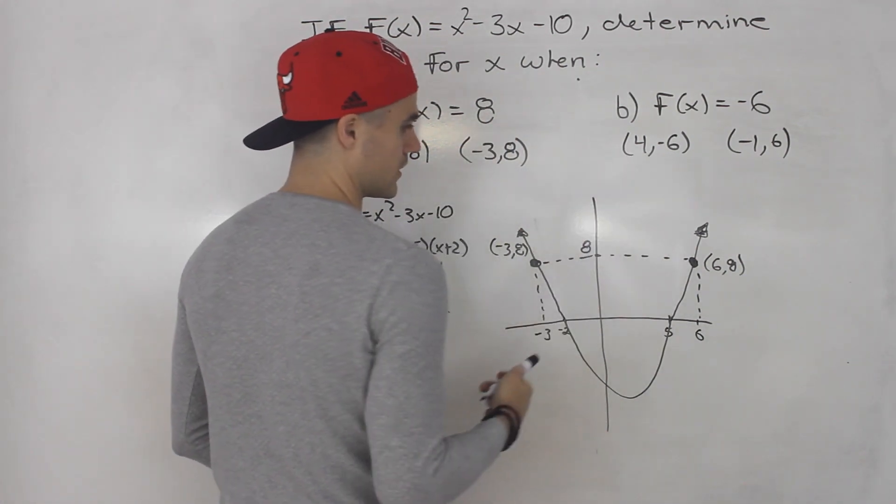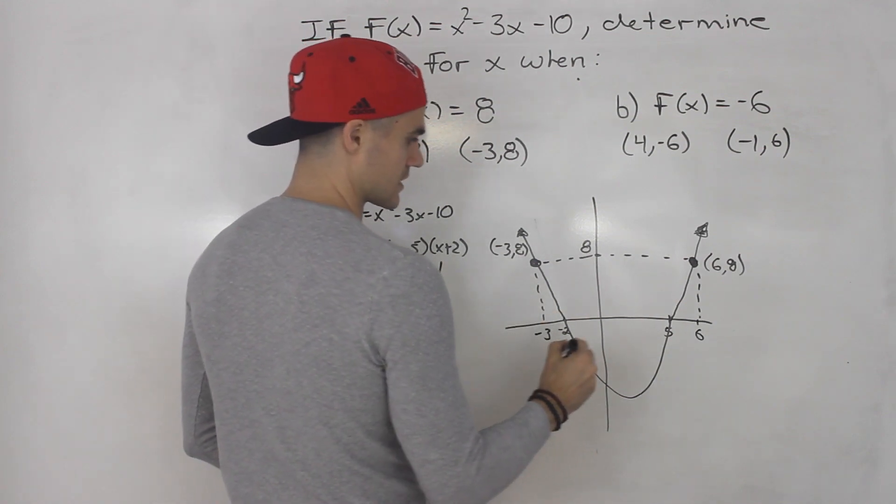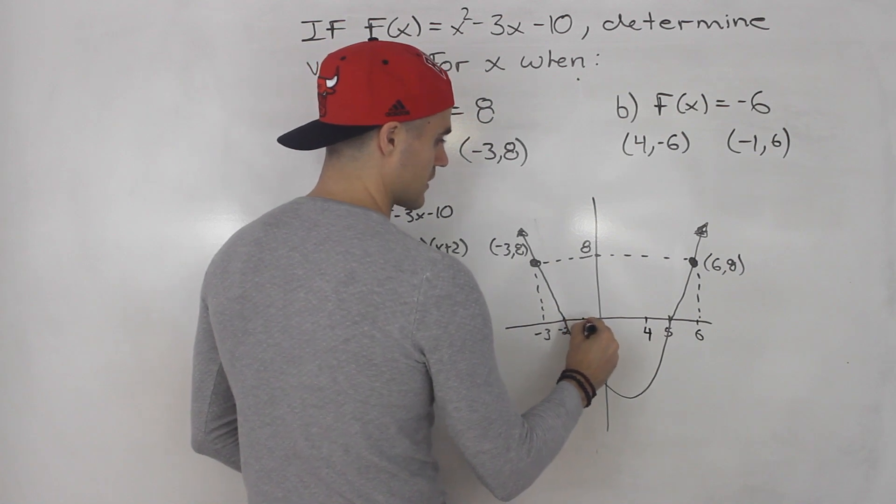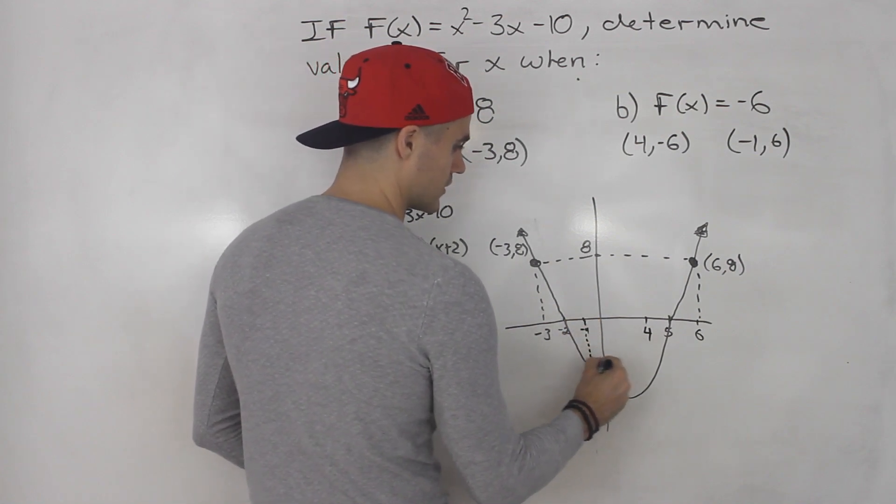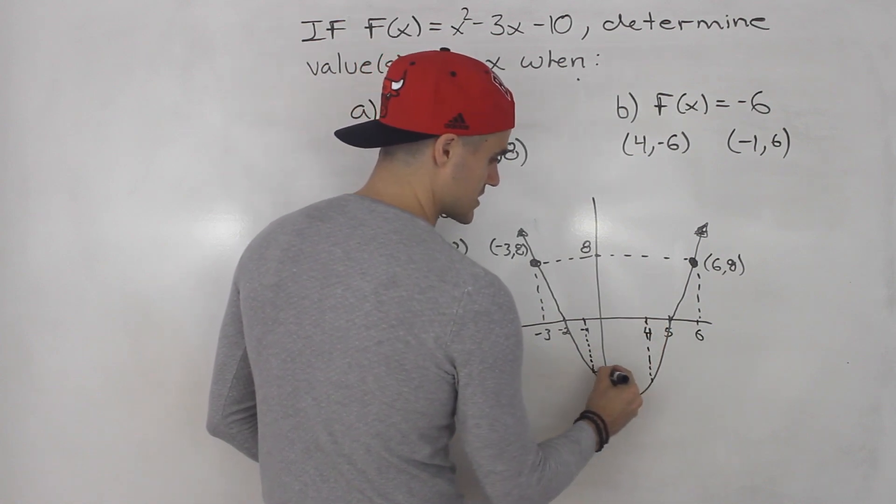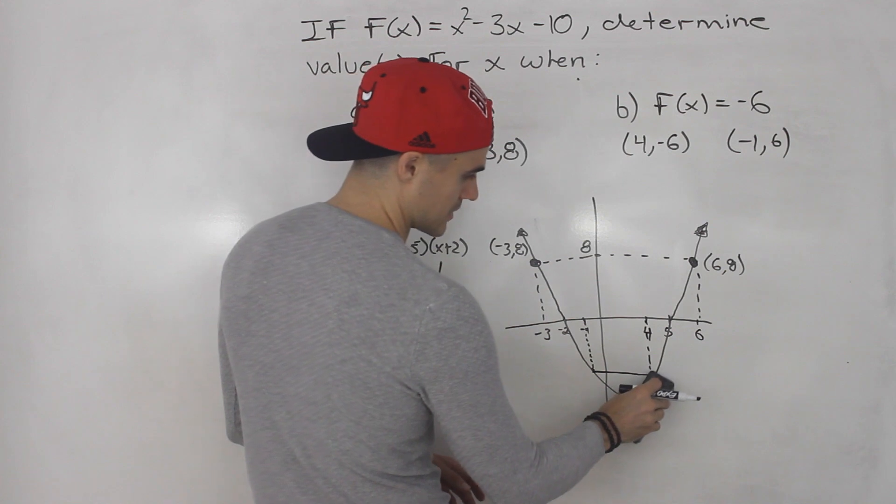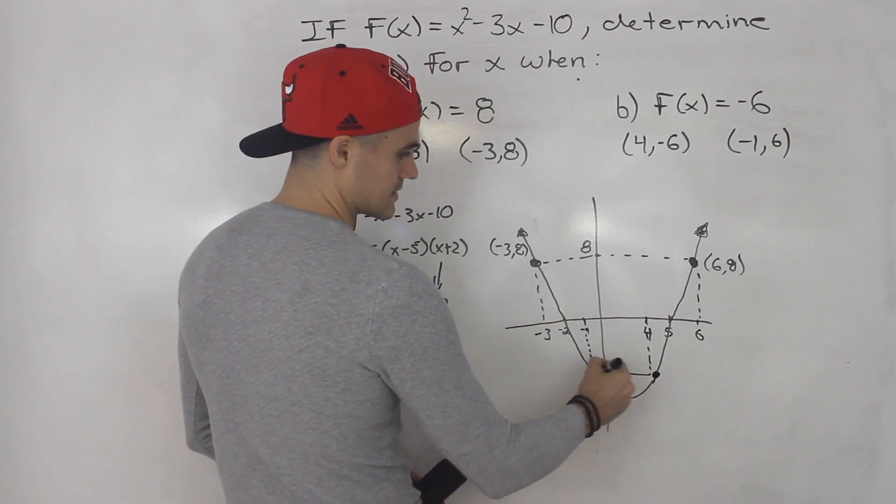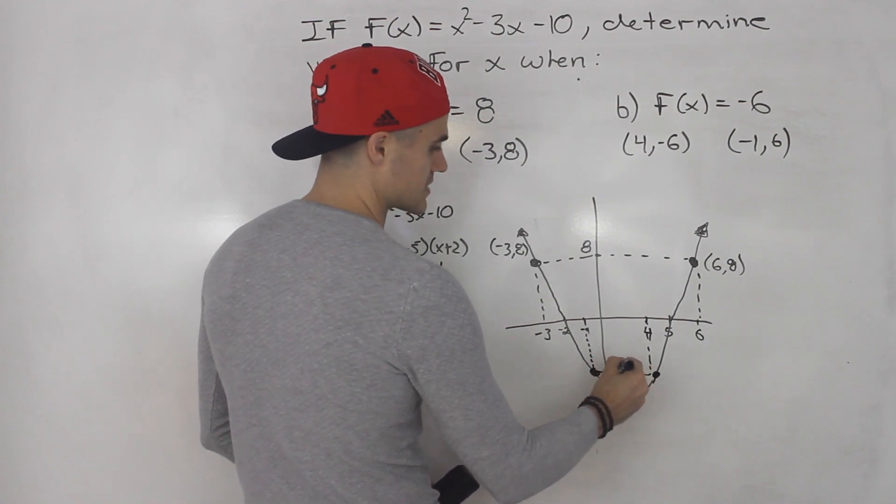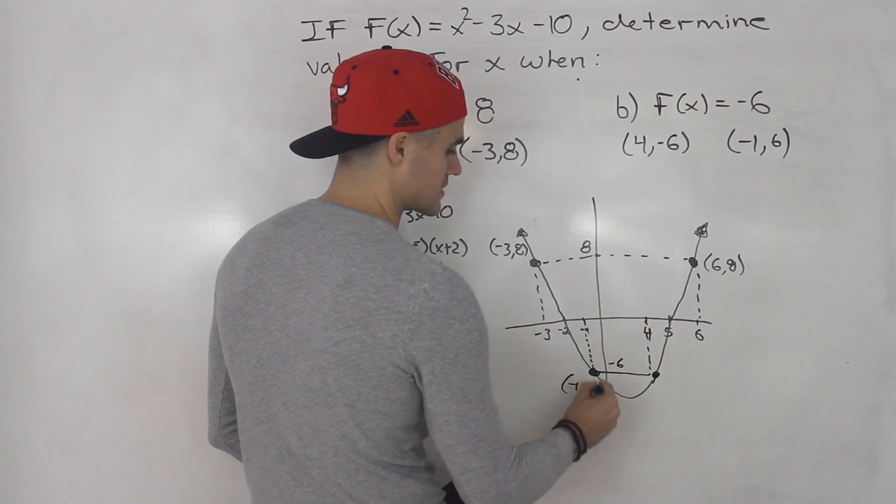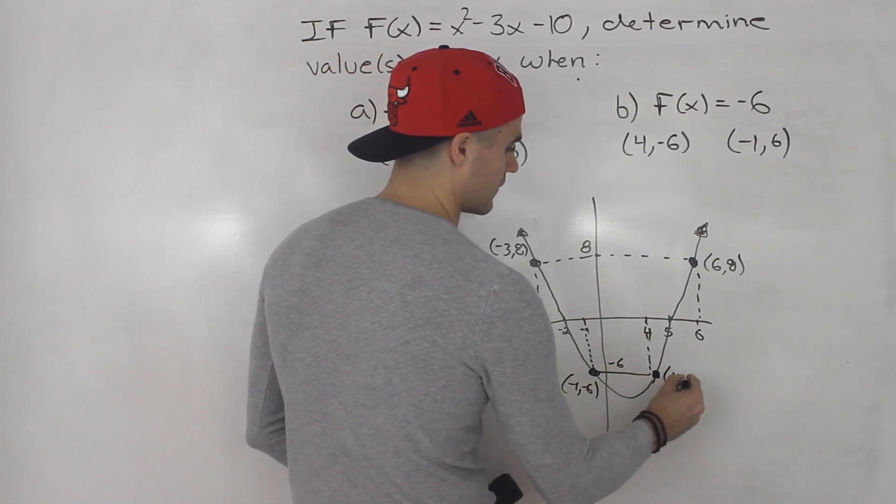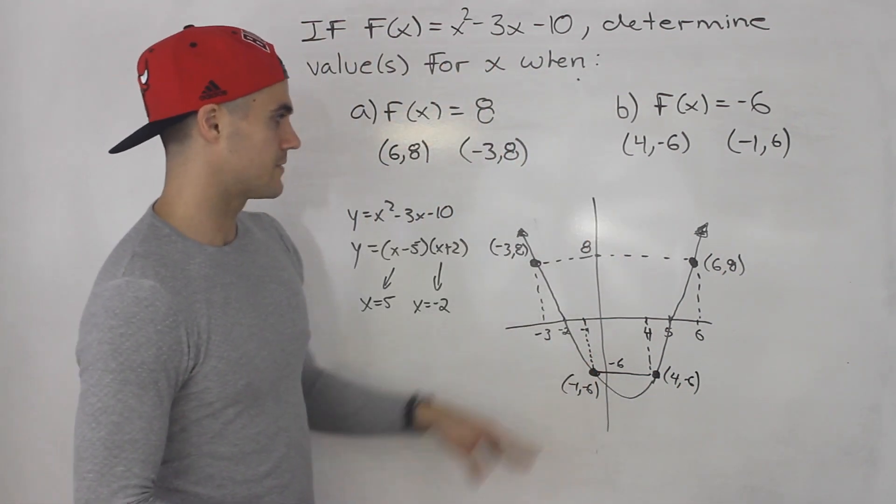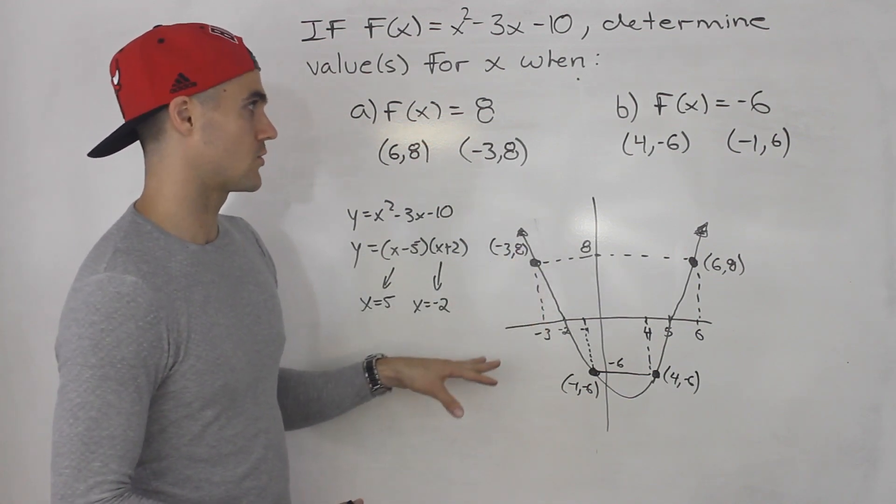And then here same thing. We got (4, -6), (-1, -6). So 4 is here, an x value 4. x value -1 is here. So drawing a dotted line down. This should be symmetrical somewhat. Sorry it's not really symmetrical but it should be. And this is happening at a y value of -6. So this coordinate here is (-1, -6) and this coordinate here is (4, -6).